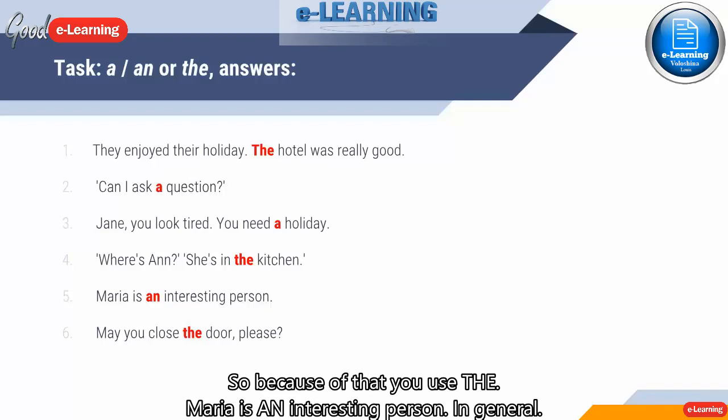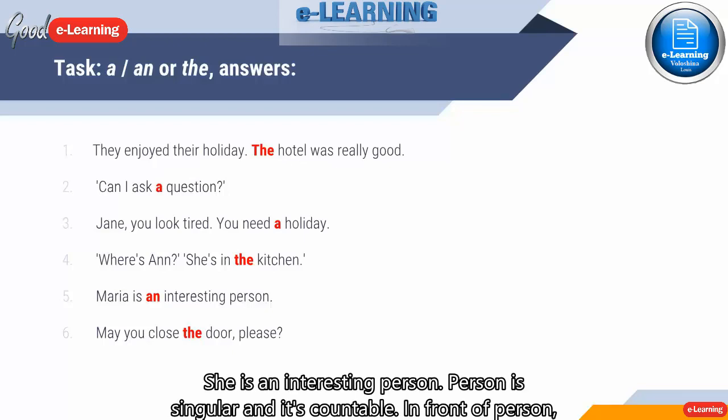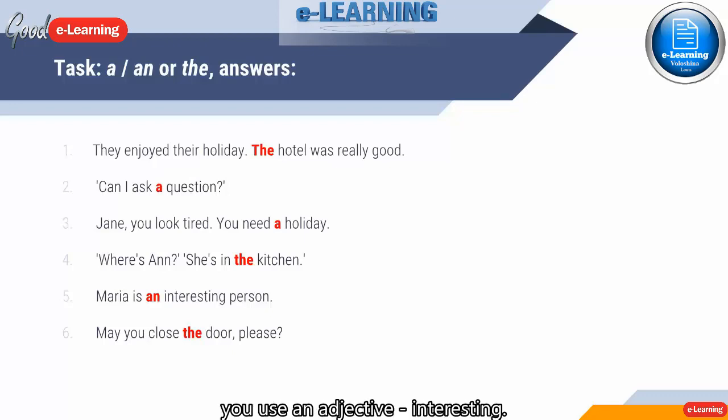Maria is an interesting person. In general, you don't say that she's the interesting person that I know. She's an interesting person. Person is singular and it's countable. In front of person you use an adjective - interesting. The adjective starts with a vowel, 'I', so that's why you need 'an'. Maria is an interesting person.